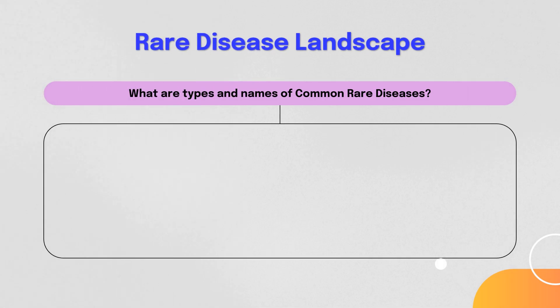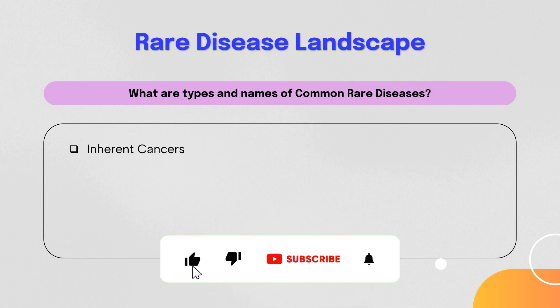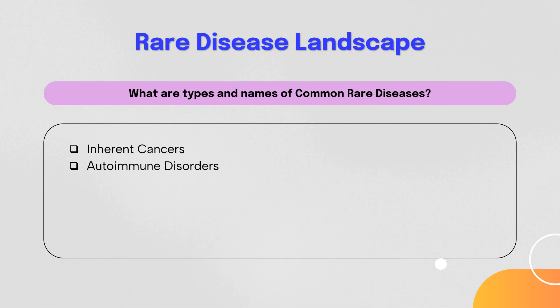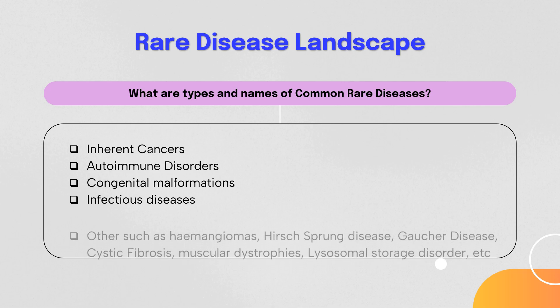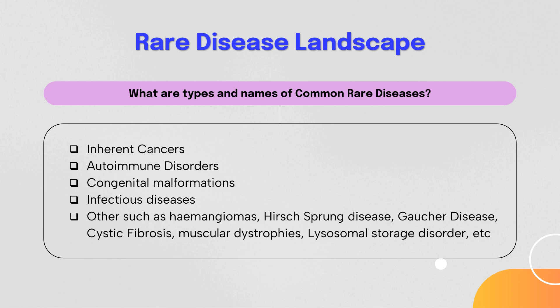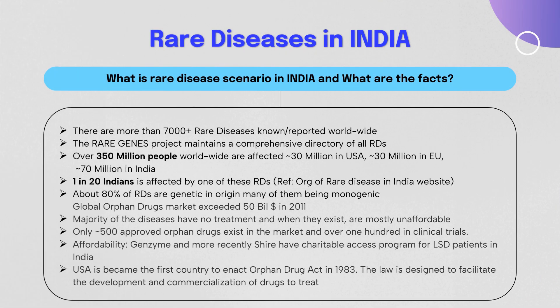Looking at the rare disease landscape, commonly known types include inherited cancers, autoimmune disorders, congenital malformations, and infectious diseases that lack wide-scale treatment. Specific examples include hemangioma, Hirschsprung's disease, Gaucher disease, cystic fibrosis, and muscular dystrophy, among others. Market treatments exist for some of these rare diseases.